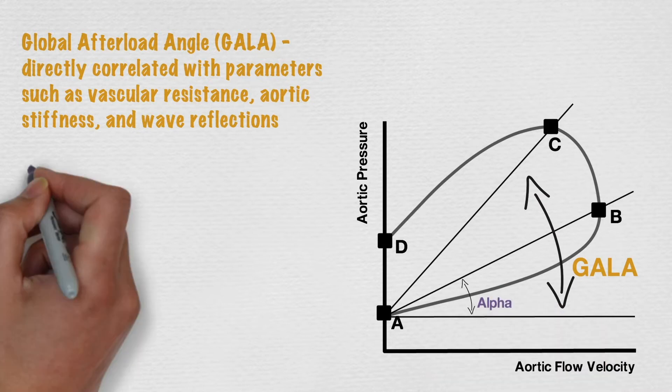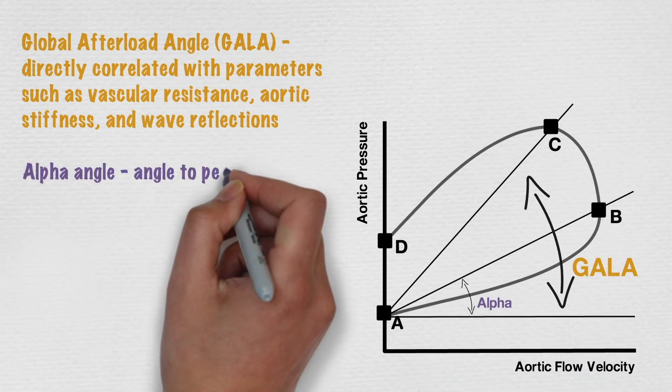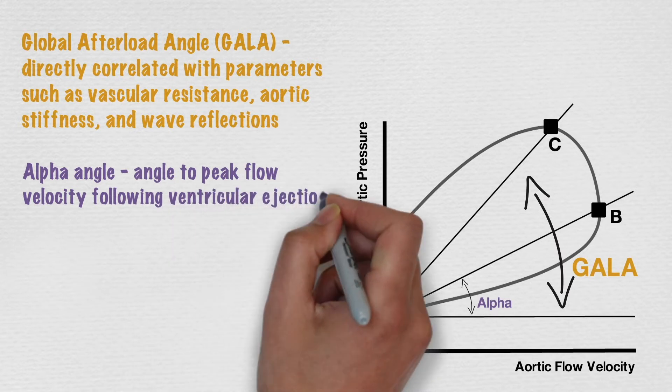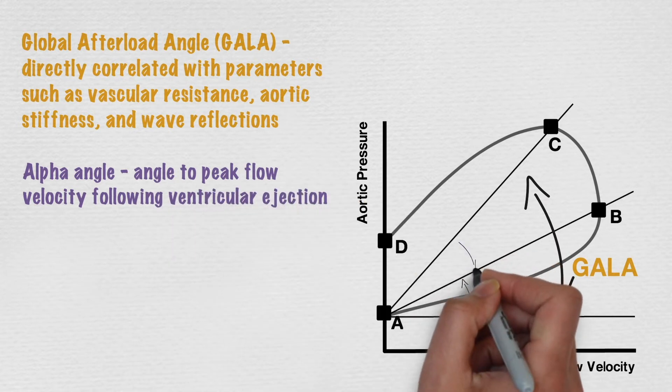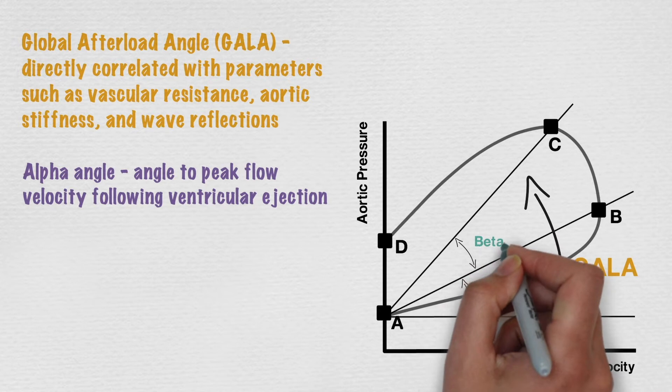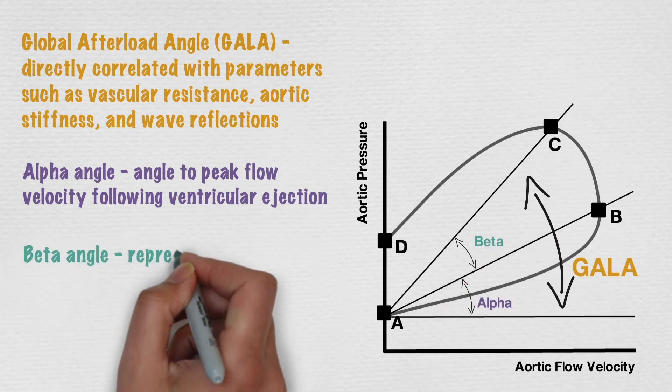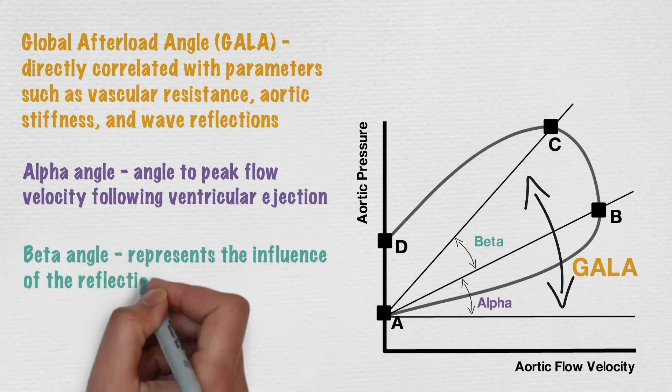The alpha, or ejection angle, is the angle to peak flow velocity resulting from ventricular ejection. And the beta, or reflection angle, represents the influence of the reflection wave on the pressure flow relationship.